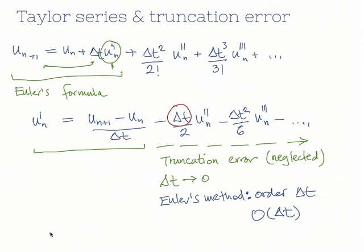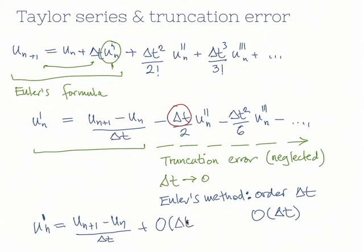We use big O notation to express this: u prime of n is equal to u n plus 1 minus u n over delta t, plus terms of order delta t. We talk about the order of the method by looking at the exponent inside the big O notation. In this case the exponent is just 1, and we say this is a first-order method because the truncation error is of first order. Euler's method is a first-order method.